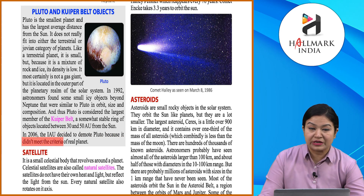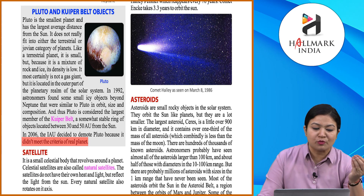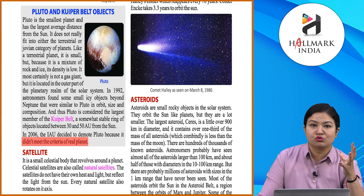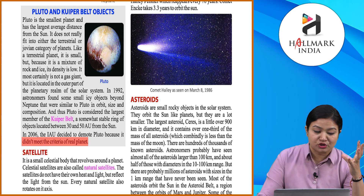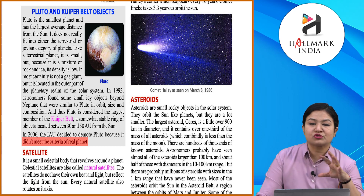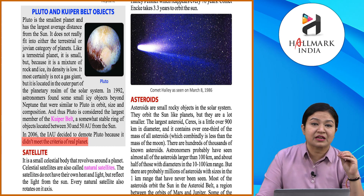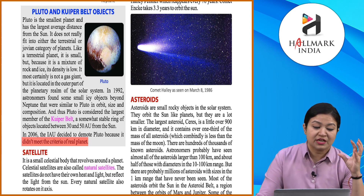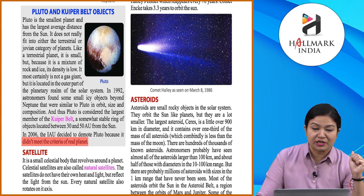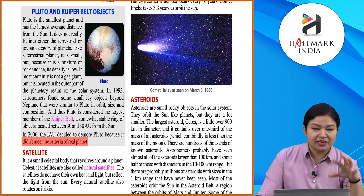Pluto was once part of our solar system, but its size did not meet the criteria required of a real planet. So in 2006, the IAU decided to demote Pluto from planet status.